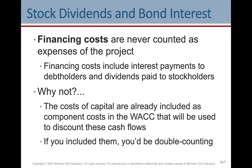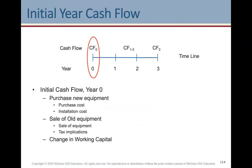An important point: financing costs aren't counted as expenses of the project. The reason is that interest payments to debt holders and dividends paid to stockholders are included in the cost of capital and in the weighted average cost of capital. So financing costs are already included when we use the WACC or whatever cost of capital is determined for the project — they're already included in the discounted cash flows. Don't include financing costs in pro formas, or you'll be double counting them.